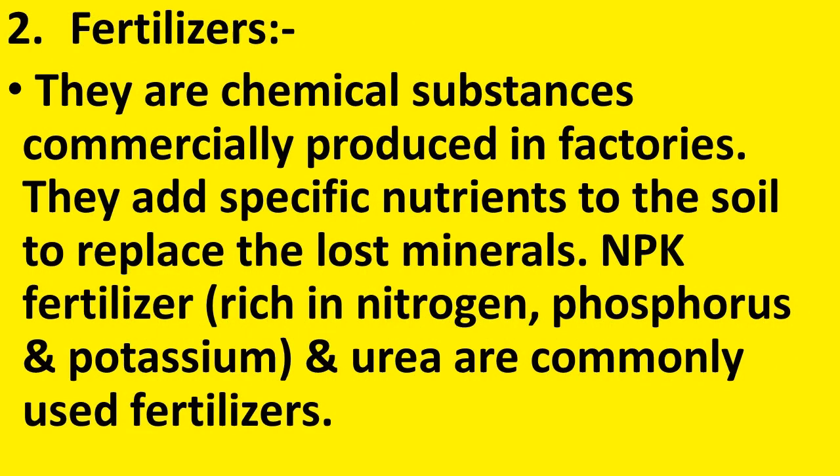Now, we will discuss chemical fertilizers. They are chemical substances commercially produced in factories. They add specific nutrients to the soil to replace lost minerals. NPK fertilizer, rich in nitrogen, phosphorus and potassium, and urea are commonly used fertilizers. Urea also contains nitrogen.